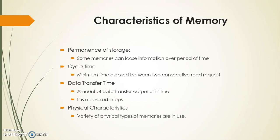Next is permanence of storage — how long data remains stored in memory. Some memories can lose information over a period of time. For example, DRAM or volatile RAM: in this type of memory, the data is not retained permanently and is lost over time. It is like volatile memory. Due to hardware failure also, data can be erased from memory.